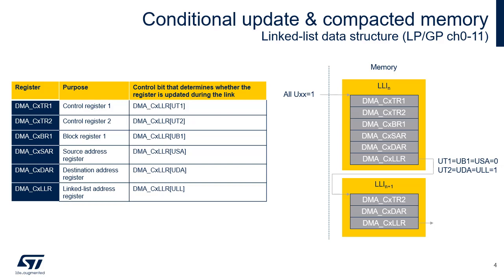Control bits related to registers that are updated are set to 1 — these are UT2, UDA, and ULL. This capability of selecting the registers that are updated is very useful to minimize the memory footprint and accelerate the link when consecutive LLIs share common configuration settings. For example, when two consecutive transfers are performed from the same source peripheral, it is not necessary to reprogram the source address.